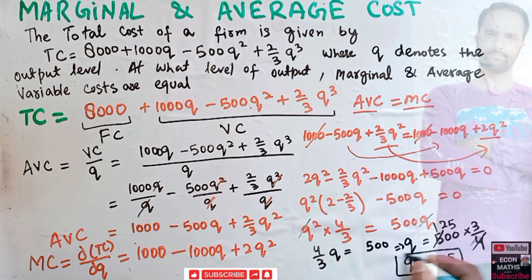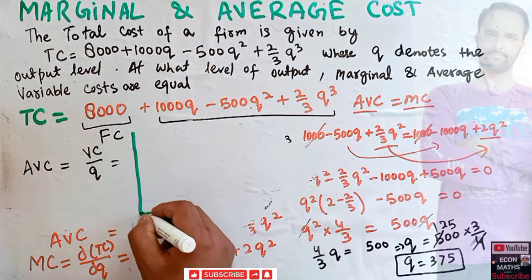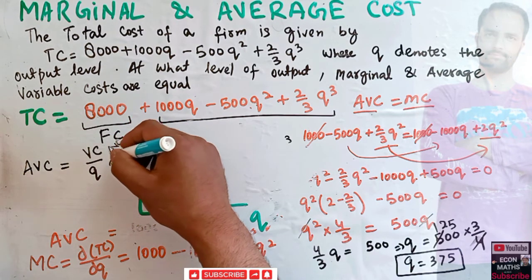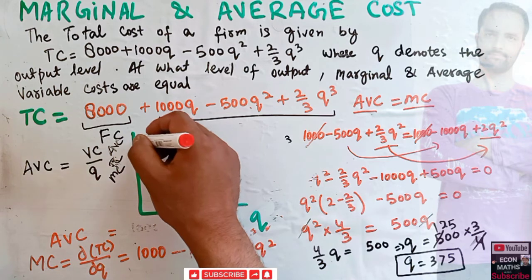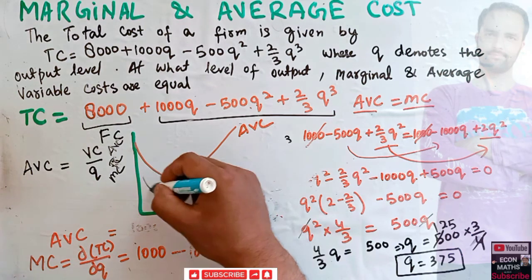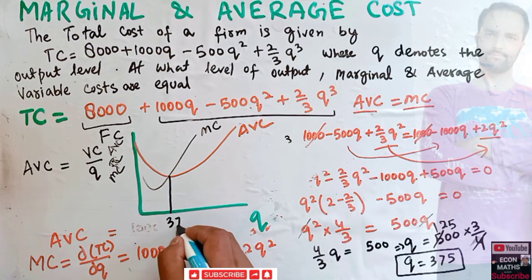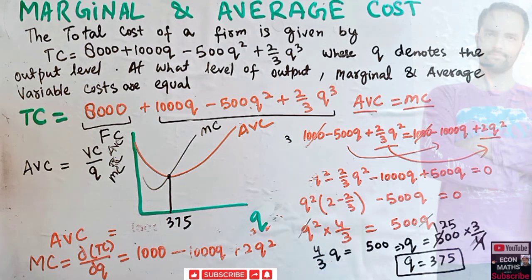So the output level where average variable cost equals marginal cost is Q = 375. Graphically, with output Q on the x-axis and cost on the y-axis, the AVC and MC curves intersect at Q = 375. At this point, average variable cost is equal to marginal cost.